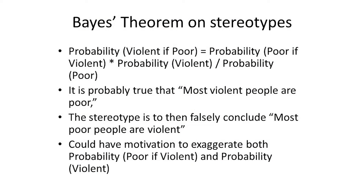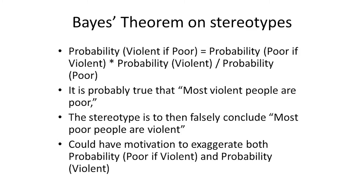Let's go back to Bayes' theorem to get really concrete. The first sentence states in words Bayes' theorem, relating the probability that most violent people are poor — which could be true — to the other probability that most poor people are violent — which is false. The reason the two are so different from each other is because the probability of violence is very low in general in the world. That's what creates the stereotype: once you believe most violent people are poor, you start believing most poor people are violent.